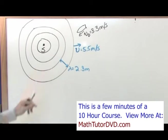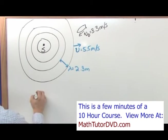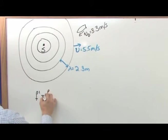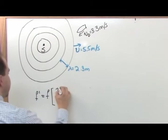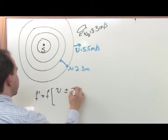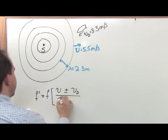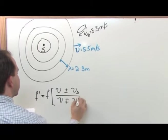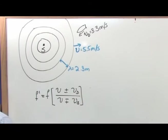Doppler shift—the granddaddy equation. The shifted frequency is going to equal the original frequency of the source multiplied by v plus or minus the velocity of the detector divided by v minus plus the velocity of the source. That's the Doppler shifted master equation.